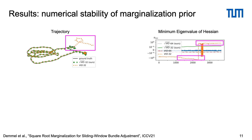We expect a minimum eigenvalue of the marginalization prior Hessian close to zero, as the prior is analytically positive semi-definite and has gauge freedom. While the conventional squared formulation leads to values with large magnitude in single precision, the square root estimator remains stable.